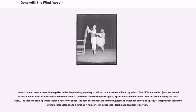Several sequels were written in Hungarian under the pseudonym Audrey D. Miland, by at least four different authors naming the colophon as translators to make the book seem a translation from the English original. The first one picks up where Ripley's Scarlett ended, and the next one is about Scarlett's daughter Kat. Other books include a prequel trilogy about Scarlett's grandmother Solange and a three-part mini-series about a supposed illegitimate daughter.